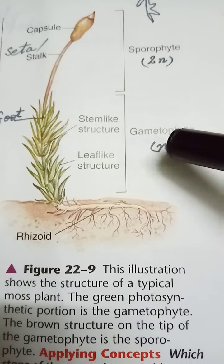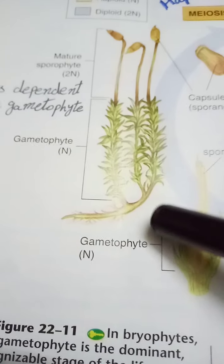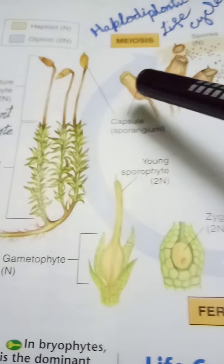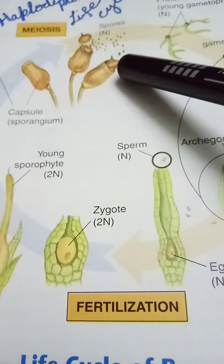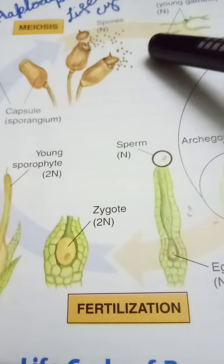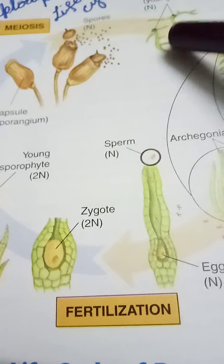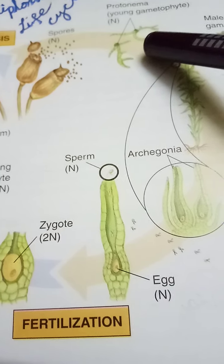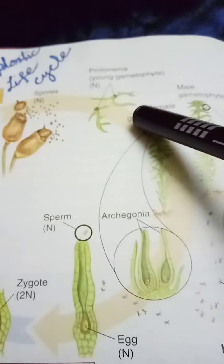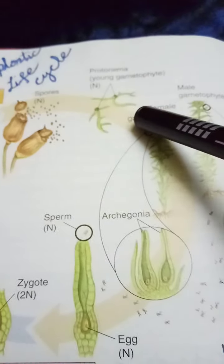The life cycle of bryophytes is a haplodiploid life cycle, as both haploid and diploid phases are present. On maturation, spores are produced in the capsule through meiosis. These spores germinate to produce a mass of tangled green filaments known as protonema.